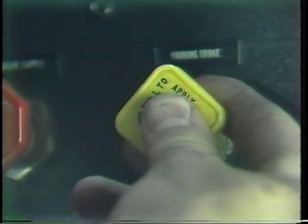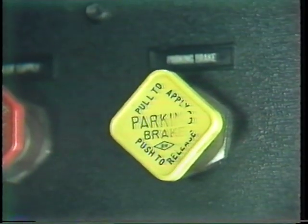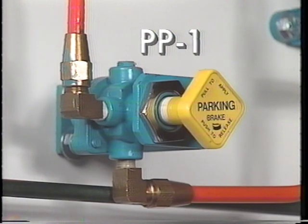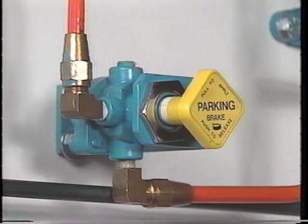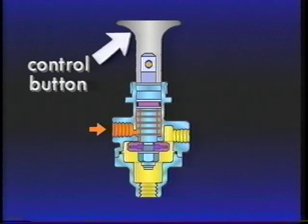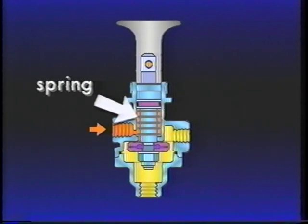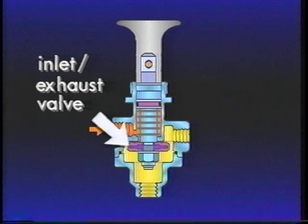PP or push-pull valves are manually operable on-off air control valves. Pushing the button in places it in the delivery position. Most are pressure sensitive like this Bendix PP1. It consists of a control button, plunger, spring, inlet exhaust valve, and body.